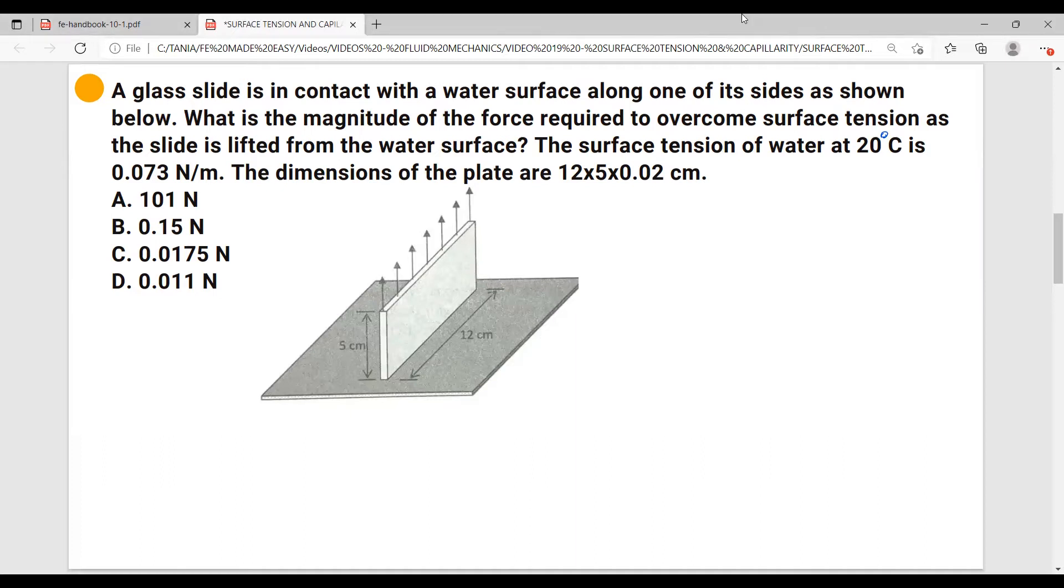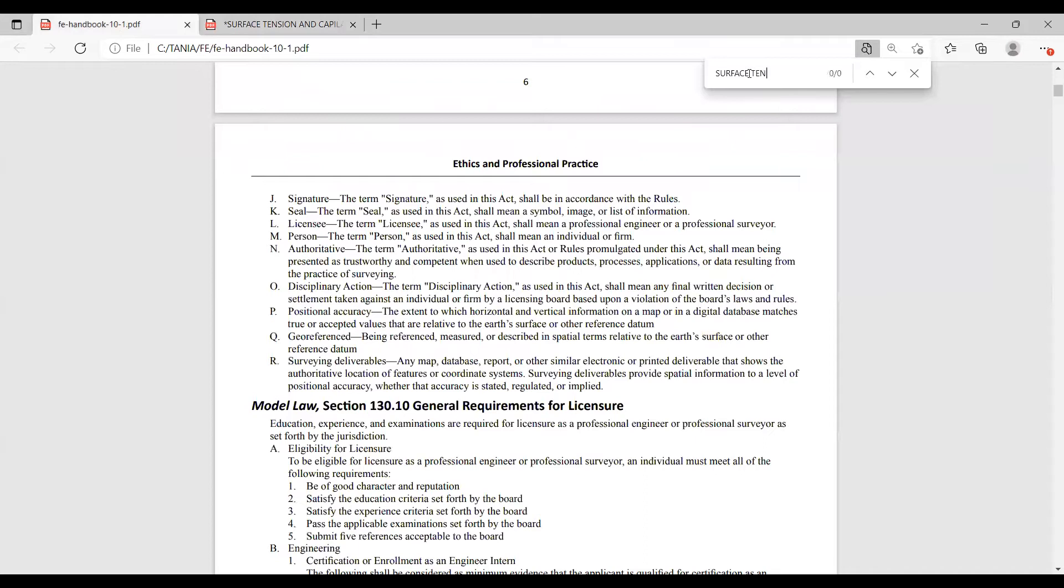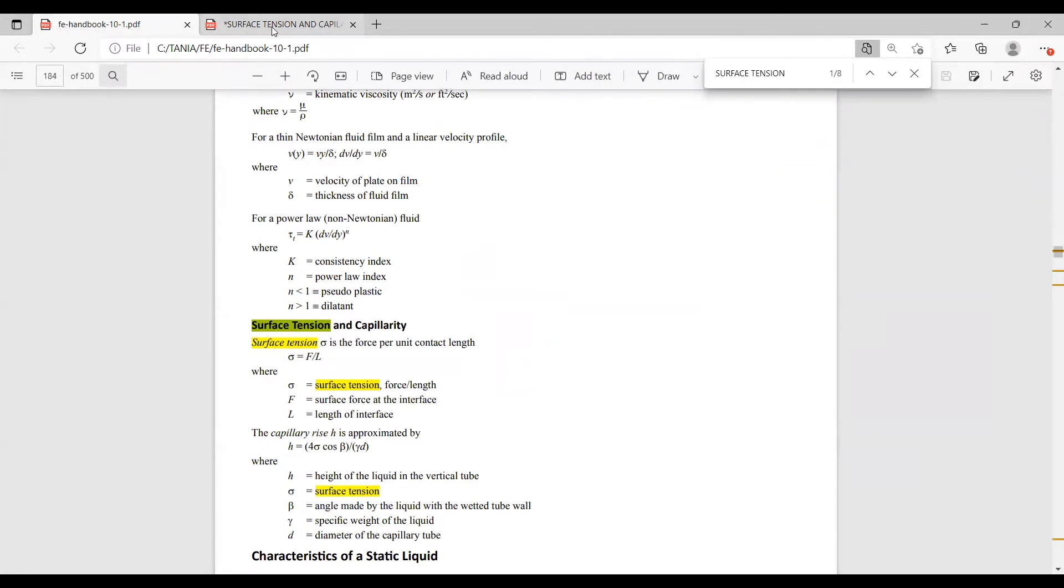So the problem is asking us to calculate the force required to overcome surface tension. Let's say you don't know how to solve this problem. I would go to the FE handbook and let's do a search for surface tension. And voila, it gets us straight to the formula. Surface tension is the force per unit contact length equals to the force over the length of interface. So let's write this formula down.